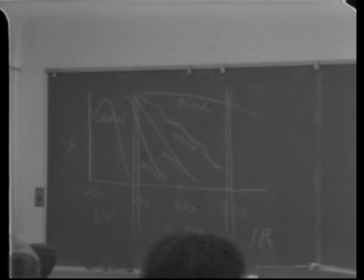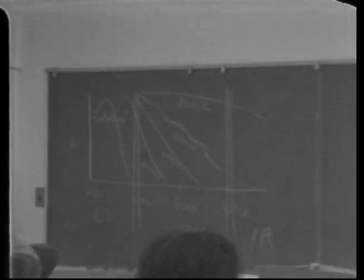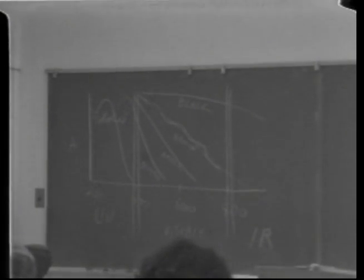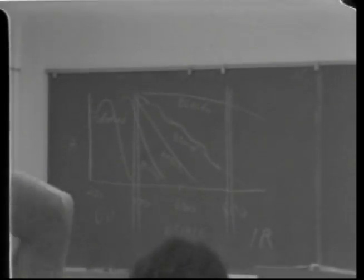But as far as wine is concerned, it's turned out that essentially all the browning, except possibly in baked sweet sherries, is from phenols. So we needn't worry about any other kind of browning except as it may interfere or overlap with phenolic browning.